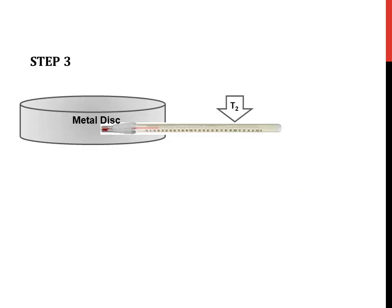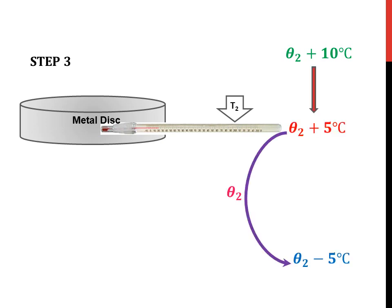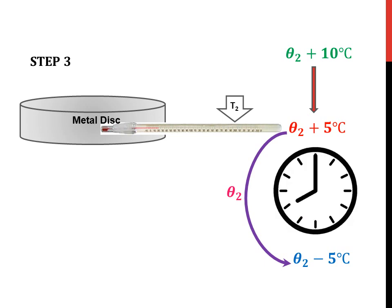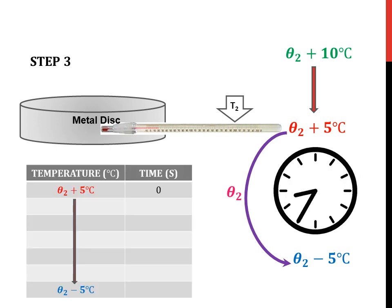After allowing the temperature of the metal disc to increase to θ2 plus 10 degrees Celsius, the steam chamber is removed. Due to a lack of the heat source, the temperature of the metal disc now starts to decrease from θ2 plus 10 degrees Celsius. As it starts to decrease, we allow the temperature to come down to θ2 plus 5 degrees Celsius, start the stop clock, and measure the various time readings for every 1 degree drop in temperature. These readings are noted continuously until the temperature of the metal disc reaches θ2 minus 5 degrees Celsius.